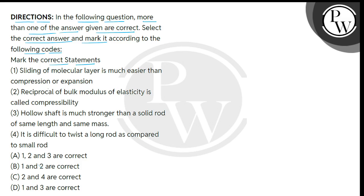So bachayon given hai humay 4 statements. Statement 1 hai sliding of molecular layer is much easier than compression or expansion. Then statement 2 reciprocal of bulk modulus of elasticity is called compressibility. Statement 3 is hollow shaft is much stronger than a solid rod of same length and same mass. And statement 4 it is difficult to twist a long rod as compared to small rod.